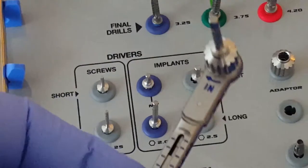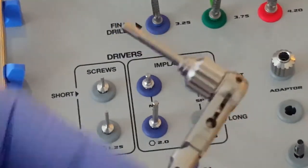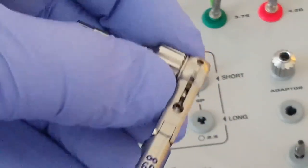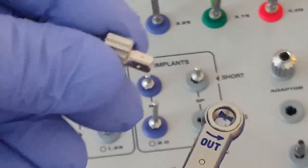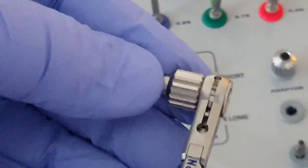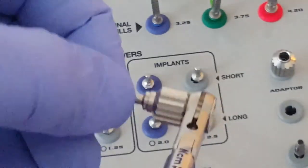If you want to reverse the implant, then simply remove the adapter with the implant insertion key. Go to the side that says out. Reinsert it, and it will now work in reverse.